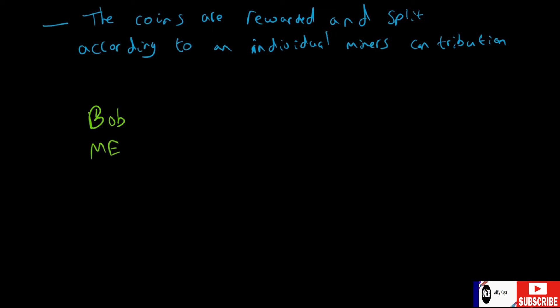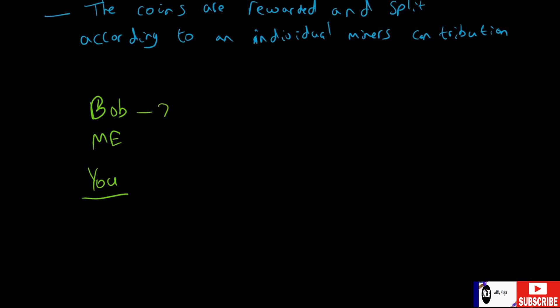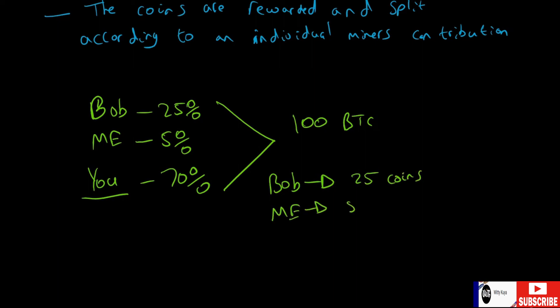So, for example, if I create a pool and there's Bob, there's me, and then there's, let's just say, you. If Bob is contributing 25% of the resources, I'm contributing five percent, I'm not contributing a lot at all, and you're contributing 70%, if all of our efforts was generating 100 Bitcoin, using basic mathematics, Bob would get 25 coins, I or me would get 5 coins, and you would get the biggest chunk at 70 coins.